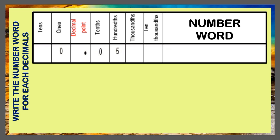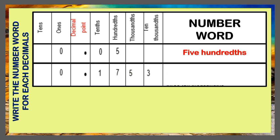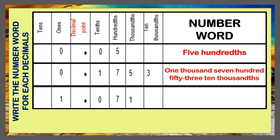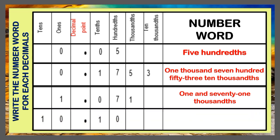Number 1. Ready? Go! The correct answer is 5 hundredths. Number 2. Ready? Go! The correct answer is 1,753 ten-thousandths. Number 3. Ready? Go! The correct answer is 1 and 71 thousandths. Last number. Ready? Go! The correct answer is 10 and 10 hundredths.